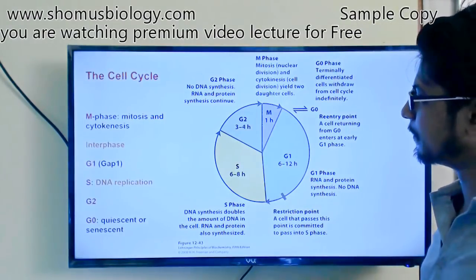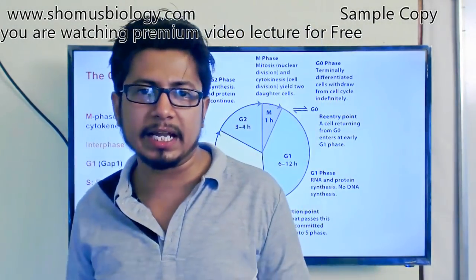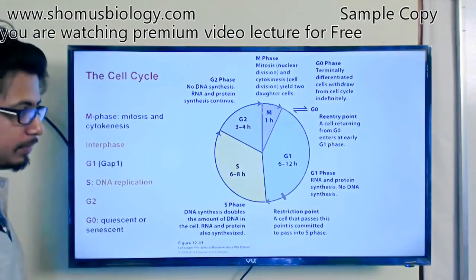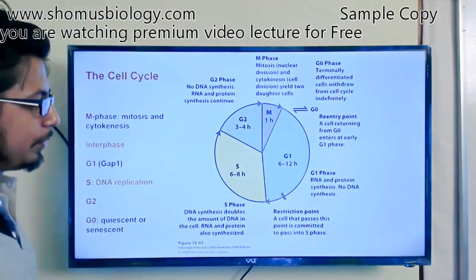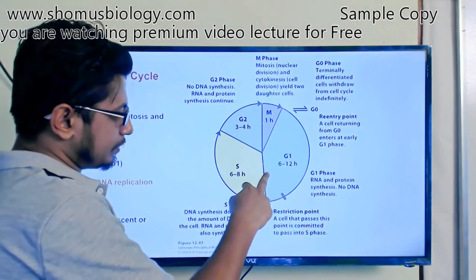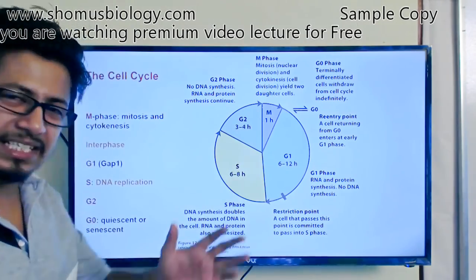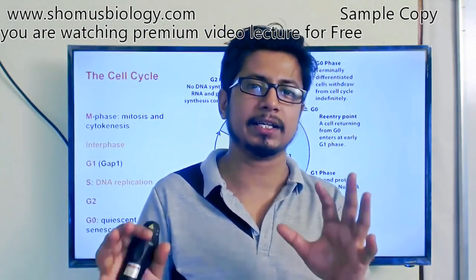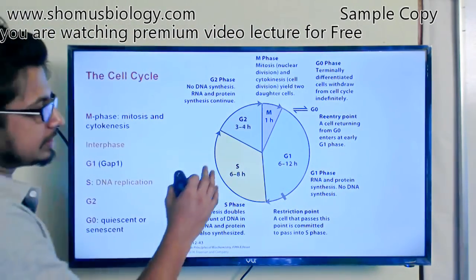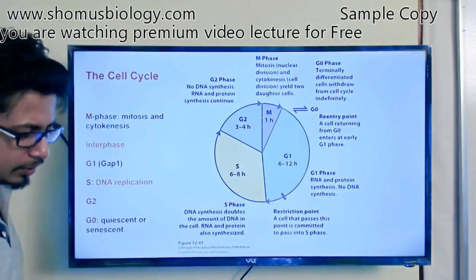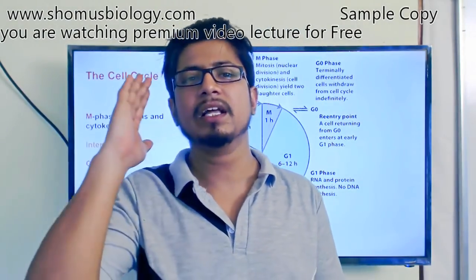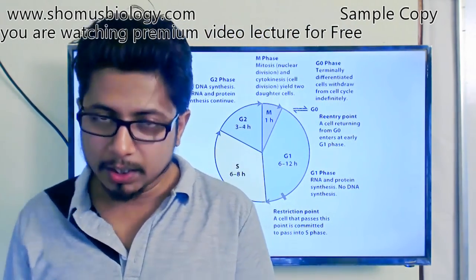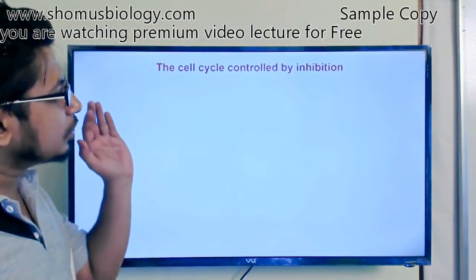Cell cycle regulation takes place with the help of checkpoints. The cell cycle is a sequential journey from G1 → S → G2 → M, and at every transition — G1 to S, G2 to M — there is a checkpoint. This checkpoint ensures that everything required for the cell to move to the next phase is ready and correct. If not, the checkpoint blocks the cell cycle from progressing. Only when everything is confirmed to be okay is the cell allowed to pass to the next phase.